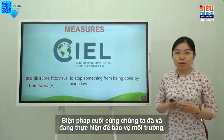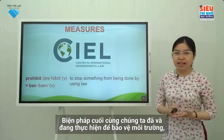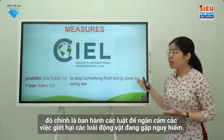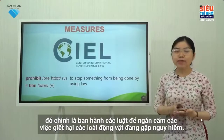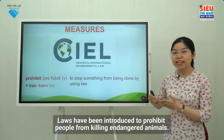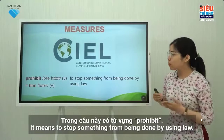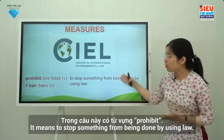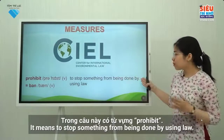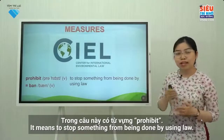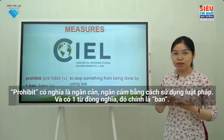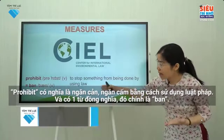The last measure we have implemented to protect the environment is to introduce laws to prohibit the killing of endangered animals. Laws have been introduced to prohibit people from killing endangered animals. In this sentence, we have one new word: 'prohibit.' It means to stop something from being done by using law. There is a synonym: ban.